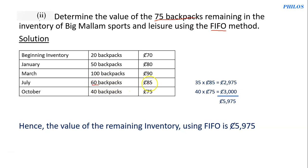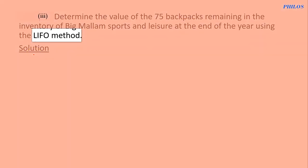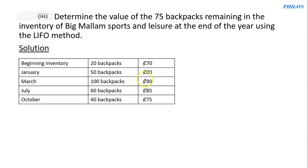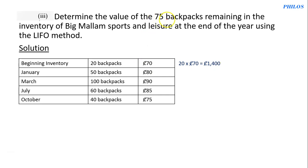To solve the same question using the LIFO method, let's draw the table again. LIFO means last in, first out — we sell the October stock before July, July before March, March before January, and January before the beginning inventory. Since it is last in first out, the remaining 75 should come from the top. Take the first 20 and multiply by 70 to get 1,400. When we take 20 out of 75 we're left with 55.